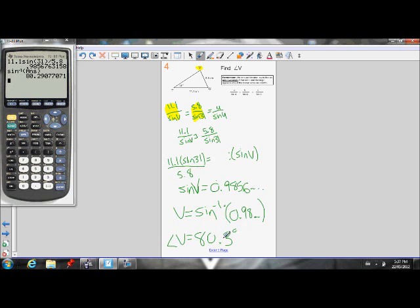So angle V equals 80.3 degrees. Never round until you get to your final answer. Good. So let's do one more example.